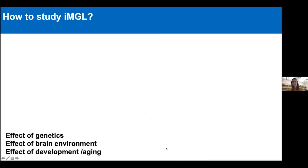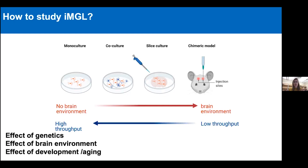Key questions we're interested in studying with these iPSC-derived microglia include: what is the effect of genetics—many disease-associated genetic mutations are found in genes highly expressed in microglia—what is the effect of brain environment on microglial function, and what is the impact of age or time during development or aging. To assess these questions, we have developed different models, from pure monoculture differentiation all the way to a chimeric model where we inject cells into a mouse brain. While monoculture is very useful for high-throughput screens and controlled challenges, the cells are clearly lacking input from the rest of the brain cells. That's why we've turned towards slice culture and chimeric models for brain environment inputs.